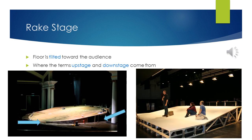Finally, the rake stage. The stage has the floor tilted towards the audience. This is where the terms upstage and downstage come from. Notice where the platform is very close to the stage and where it is very far away. Now imagine having to do things like act or dance on such a stage.